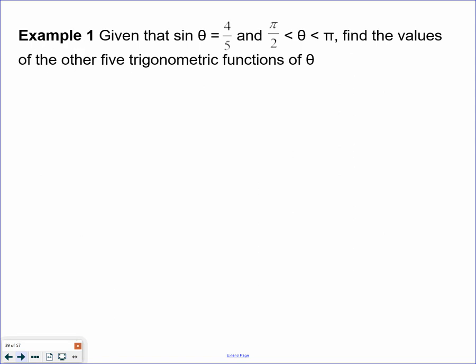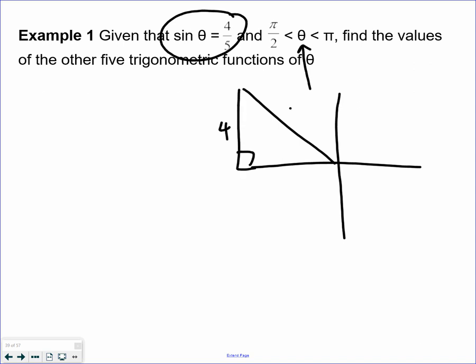This question we've done—it's actually something previously done. You're given one of the trig functions and a quadrant. I know it doesn't say quadrant 2, but that is what that is. We are in quadrant 2 because we're between pi over 2 and pi. The sine is opposite and hypotenuse, so I can find the missing side using Pythagorean theorem. Find the other five trig functions.